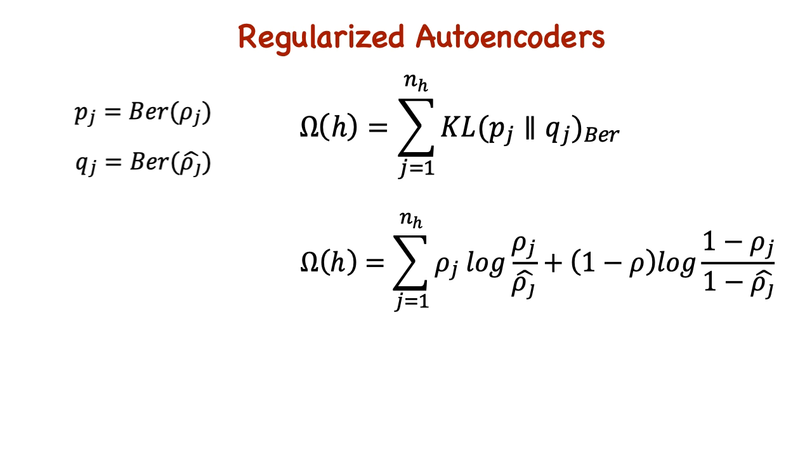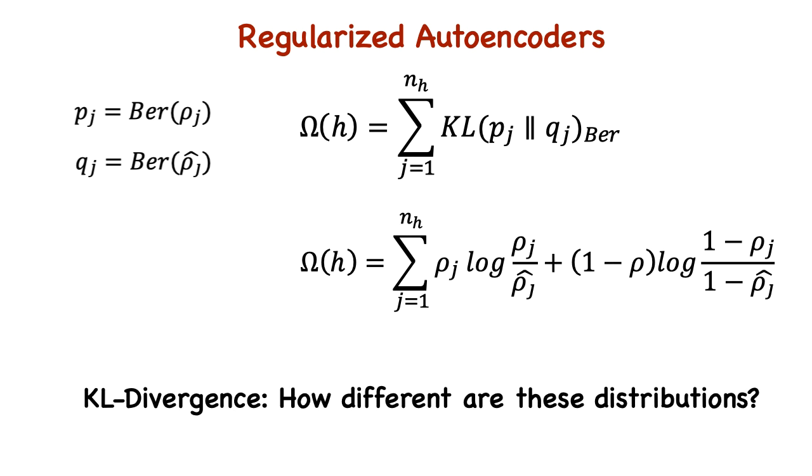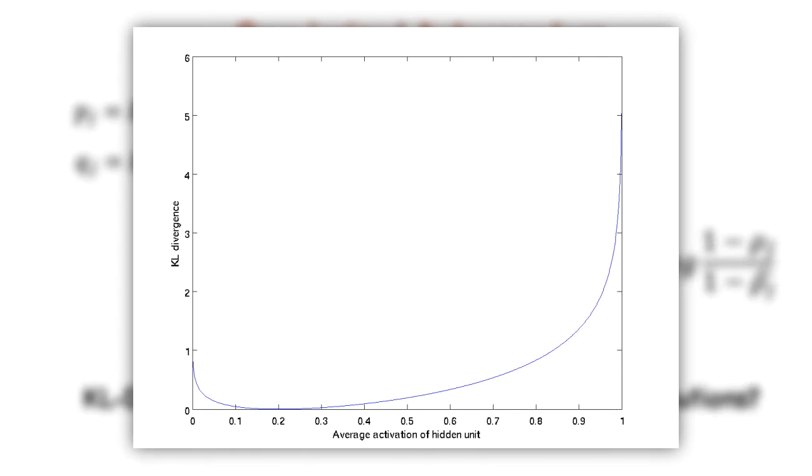Now this is just one loss function that could work. We are considering a sigmoid activation. This is equivalent to the KL divergence between two Bernoulli distributions, with the probability of success being ρ_j and ρ_j hat. By the way, KL divergence is a measure of difference between two distributions. Ideally we want to minimize it. This graph shows the KL divergence when ρ is equal to 2, for sigmoid activation. Clearly it's minimum when ρ is equal to ρ_j hat.